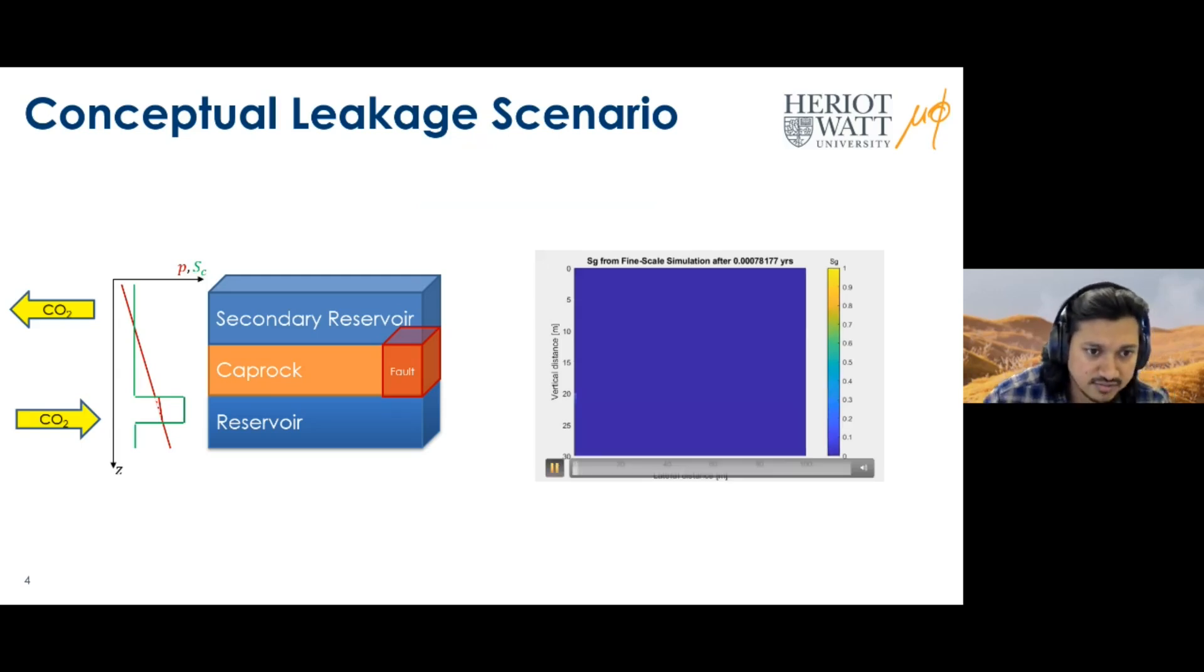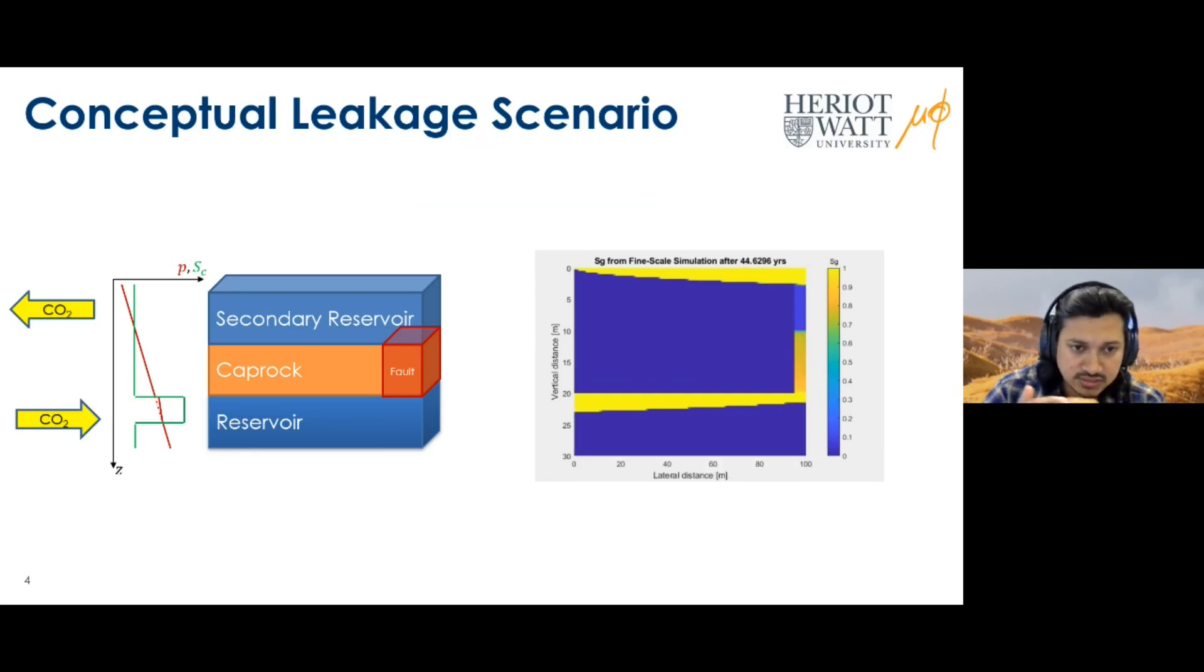I can show you the simulation saturation evolution for such a scenario where you inject CO2 at the base and the CO2 comes out at the top. This is a buoyancy-dominated system. The key parameter we'll use for comparison for all the other modeling approaches will be the gas flux coming out of the top reservoir from the left boundary condition. That's how we'll compare results. The question is: can we minimize this model? Can we get a good reduced-order model?